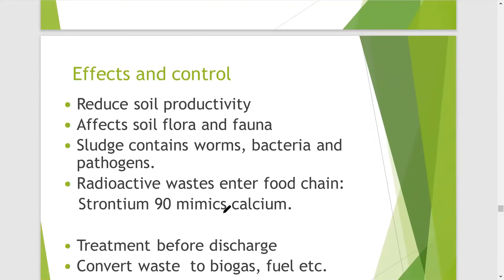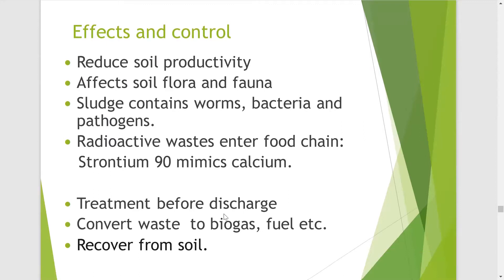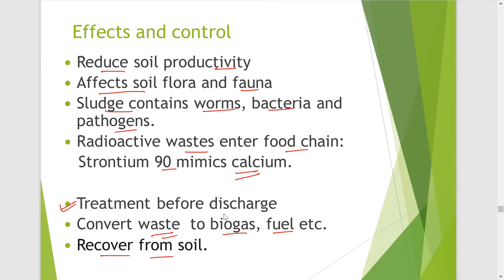Effects of soil pollution include reduced soil productivity and effects on soil flora and fauna. Sewage sludge contains worms, bacteria, and pathogens. Radioactive waste enters into the food chain — for example, strontium mimics calcium. To control soil pollution, all sewage and sludge should be treated before discharge. We can convert waste to biogas and fuel. Heavy metals can be recovered from soil using microorganisms like bacteria — a technique known as bioremediation.